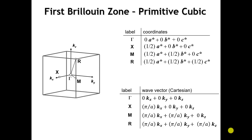One really nice thing about the band structure here is we're back to a primitive cubic lattice, and so we have this simple, easy-to-understand primitive cubic first Brillouin zone. We talked about this first Brillouin zone in our first lecture on the structures of three-dimensional crystals when we talked about alpha polonium. So if you're a little bit confused on the special points, I would suggest you go back to that lecture.